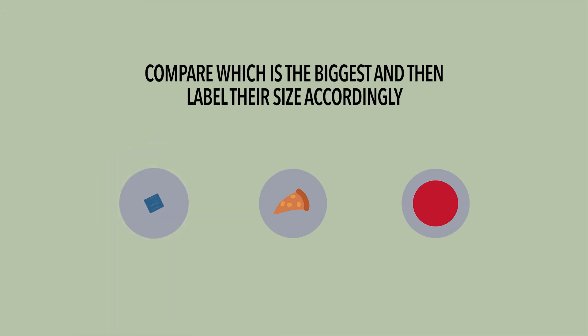Because the blue block of wood is the smallest of the three, let's write it as small. The orange pizza is next, so it's sized medium. While the red ball is the largest, so it's written as large.